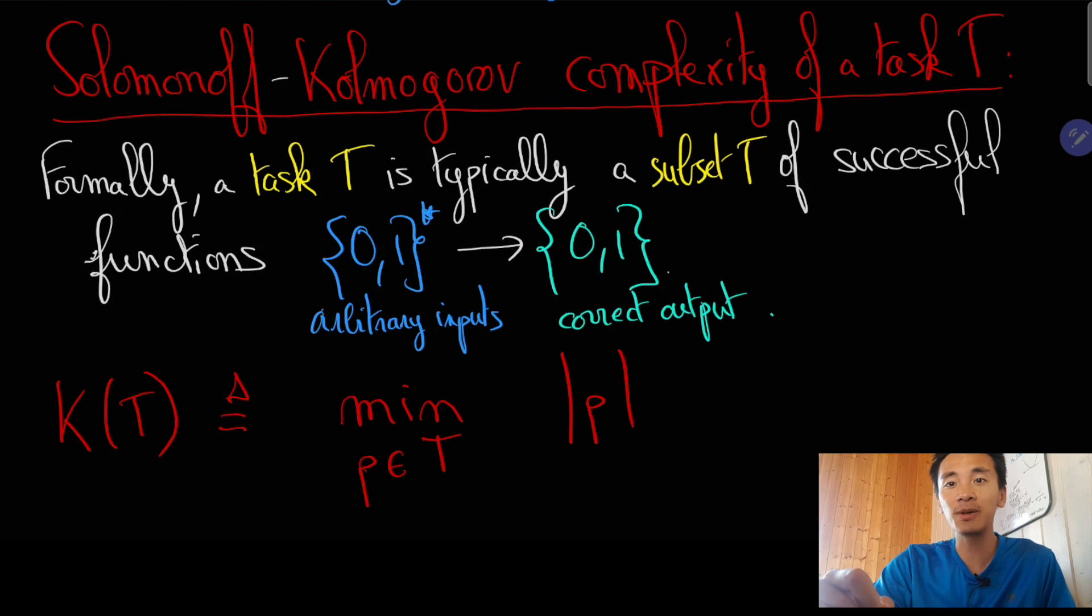After all, if a task requires algorithms with a trillion lines of code to be solved, then no human nor any group of humans will be able to solve the task by programming it by hand. To solve the task, they will need algorithms that essentially write most of the algorithm's code. And this is what Turing called learning machines.